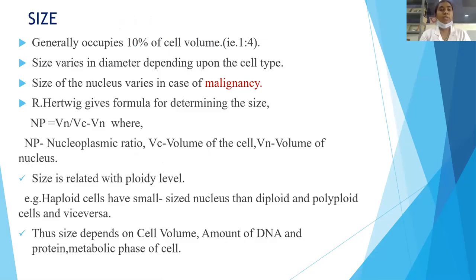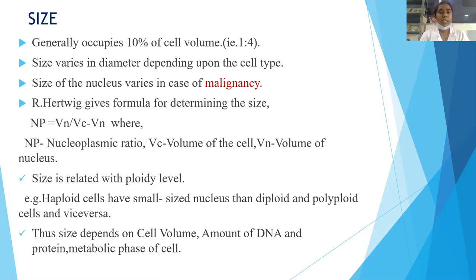Regarding size: generally, the nucleus occupies 10% of cell volume, a ratio of 1 to 4. Size varies in diameter depending on cell type, and size of the nucleus also varies in cases of malignancy. Hertwig gives a formula for determining the size of the nucleus: nucleoplasmic ratio (Np) = Vn / (Vc − Vn), where Vc is the volume of the cell and Vn is the volume of the nucleus. Size is also related to ploidy level — haploid cells have smaller nuclei than diploid and polyploid cells.